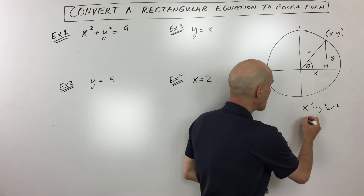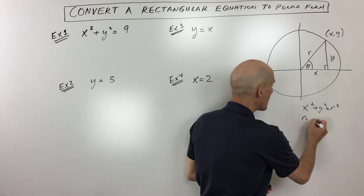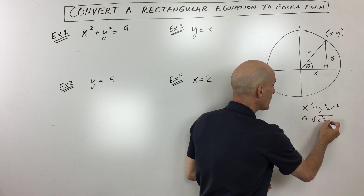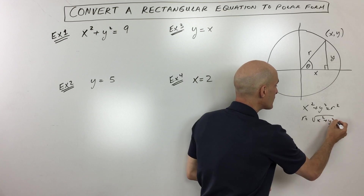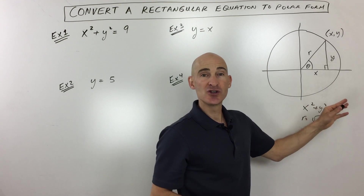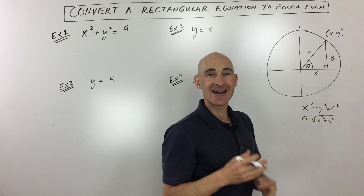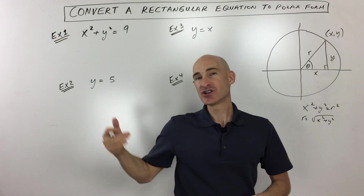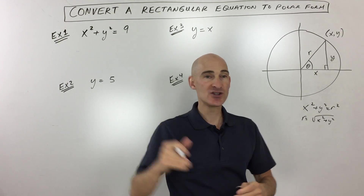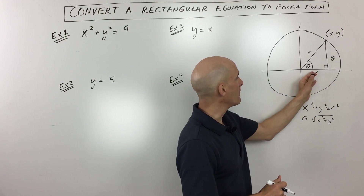You can take the square root of both sides and write r equals the square root of x squared plus y squared. We're going to be using all of these connections to translate rectangular equations into polar form.